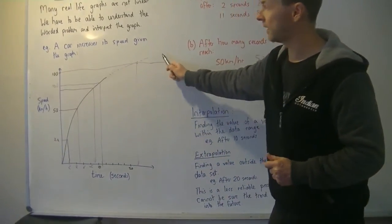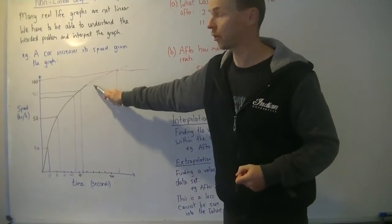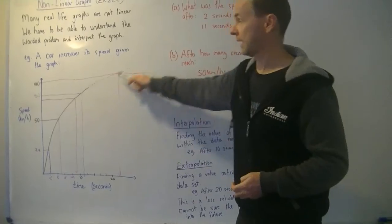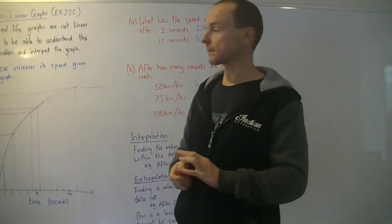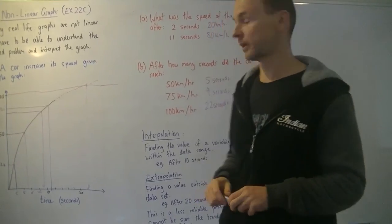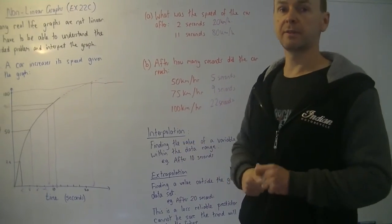It looks like the graph is going to go like that. But we don't actually know for sure what's happening with that car. Maybe it stops here. Maybe it takes off really fast. We don't know. But we're just making a prediction. So therefore it's not as accurate or not as reliable as a predictor as within a data series.